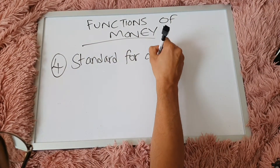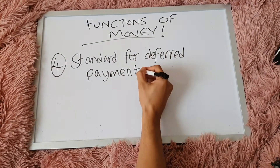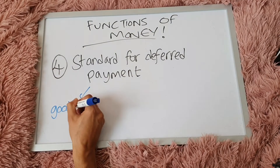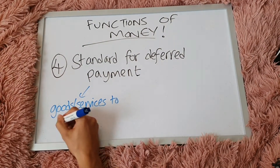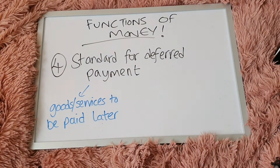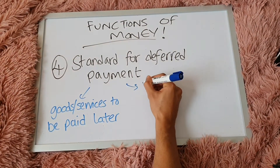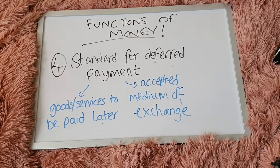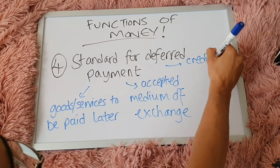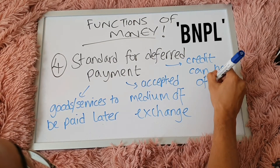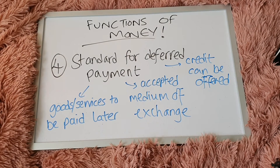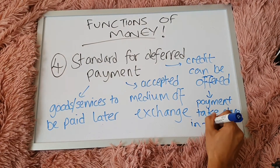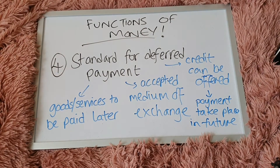In terms of the last and fourth function of money, it is a standard for deferred payment. Money allows individuals to pay for goods and services at a later date, despite their consumption taking place now. So they purchase the good or service but will be paying it later, because money provides that security as an accepted medium of exchange. We've probably heard of it — buy now, pay later — a credit form of agreement offered by the seller to the buyer, where the payment takes place in the future. So those are the four functions of money.